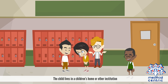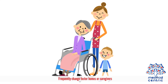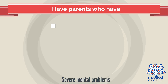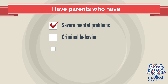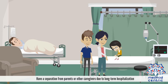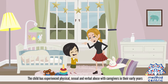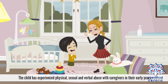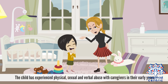The risk for a child to develop the disorder may increase if the child lives in a children's home or other institution, frequently changes foster homes or caregivers, has parents who have severe mental problems such as criminal behavior, postpartum depression, anger problems, or substance abuse that impair parenting, has a separation from parents due to long-term hospitalization, or has experienced physical, sexual, and verbal abuse with caregivers in their early years.